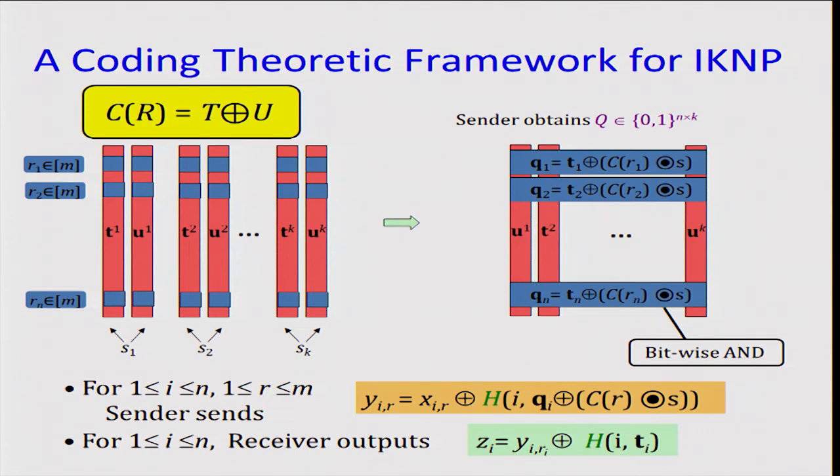When C is the repetition code, as a sanity check, we can see that it's exactly the same as IKNP. In particular, when RI equals zero, C of RI will be the all zeros vector, so you will have QI equals TI. And when RI equals one, then C of RI will be the all ones vector, in which case you will have QI equals TI XOR S.